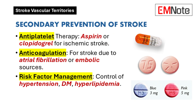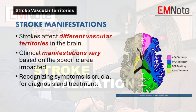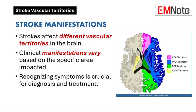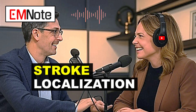What about long-term care? Knowing which area of the brain was affected allows us to anticipate potential challenges during recovery and develop targeted strategies to address them. We've explored how each artery supplies a specific region of the brain, how damage leads to unique neurological deficits, and how this knowledge helps us diagnose strokes quickly, make informed treatment decisions, and provide tailored care. Remember: time is brain, every minute counts. Thank you for joining us on this deep dive into stroke vascular territories.